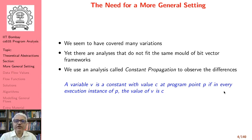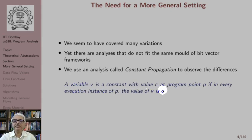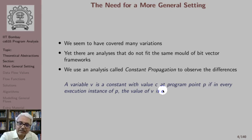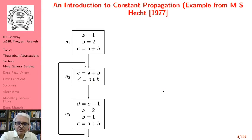In constant propagation, we identify variables that are supposed to have constant values at a program point. We say a variable v is a constant with value c at a program point p if in every execution instance of p, the value of v is c — meaning in every possible run of the program, the variable has a known value at compile time. So there is no need to perform computations using these values at run time. We begin by looking at an example, an introduction to constant propagation, from the book by MS Hecht.